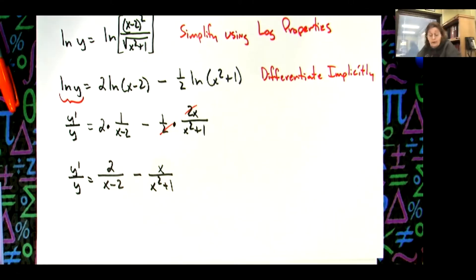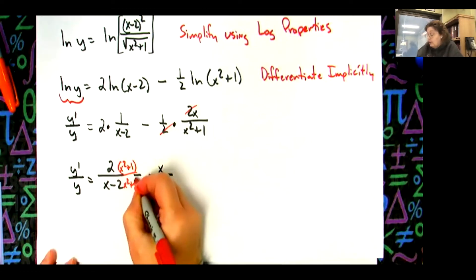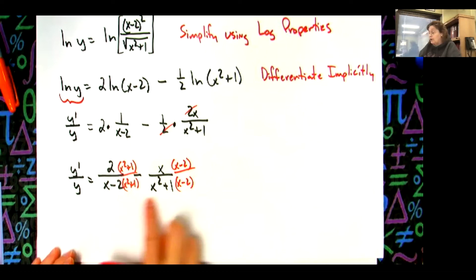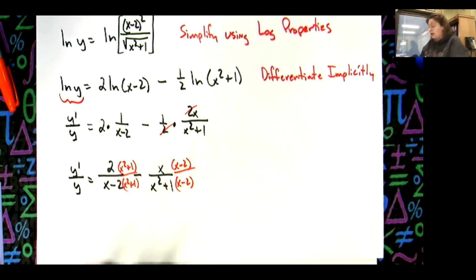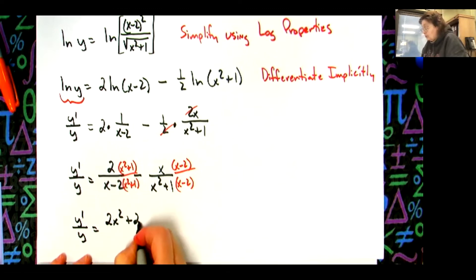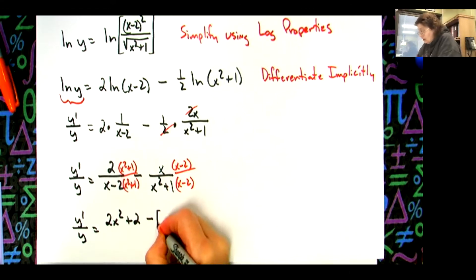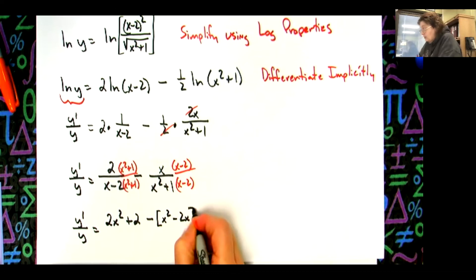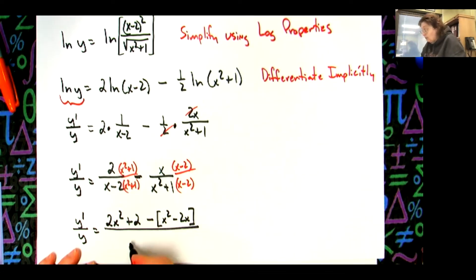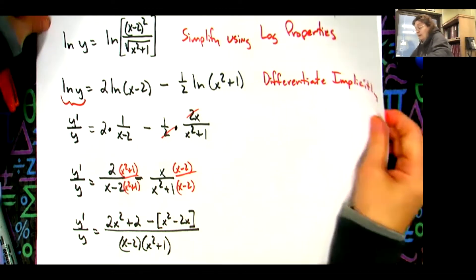This isn't too bad. Multiply the first fraction by (x squared plus 1) over (x squared plus 1), and multiply the second fraction by (x minus 2) over (x minus 2). The common denominator is (x minus 2)(x squared plus 1). On top, distribute: 2(x squared plus 1) gives 2x squared plus 2, minus x times (x minus 2), which is x squared minus 2x. I'm showing all steps so you don't drop a negative.